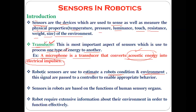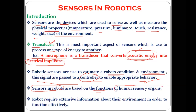Robotic sensors are used to estimate the robot's condition and the environment. These signals are passed to the controller to enable appropriate behavior. The sensors take information from the environment and pass it to the robot's controller, which then performs a particular activity. In short, sensors in robots function just like human sensory organs — eyes, ears, nose, and so on.